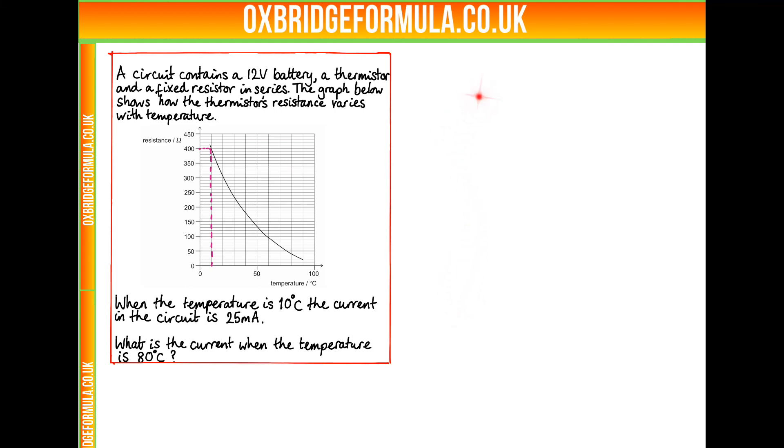So how do we get this fixed resistor resistance? Well, we know the voltage and we know the current. So 12 divided by this is 400 from the thermistor plus R, the one we don't know. So 12 over 25 is 48 divided by 100, so this is 48 divided by 100 thousandths. So this is 48 divided by 10, which is 480. And therefore, R is equal to 80 ohms.